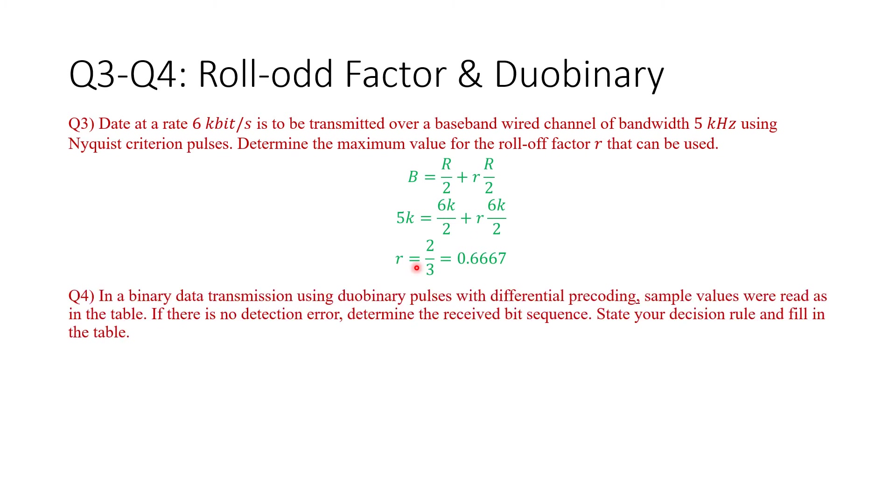Question number four. In a binary data transmission using duobinary pulses with differential precoding, remember this is duobinary pulses with differential precoding, sample values were read as in the table. I'm going to show the table. There is no detection error. Determine the received bit sequence, state your decision rule, and fill in the table.